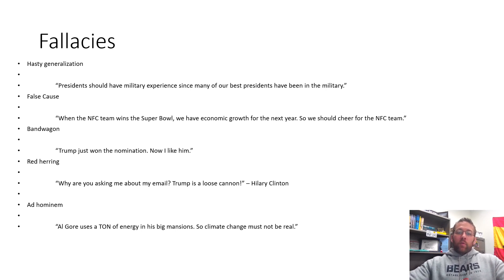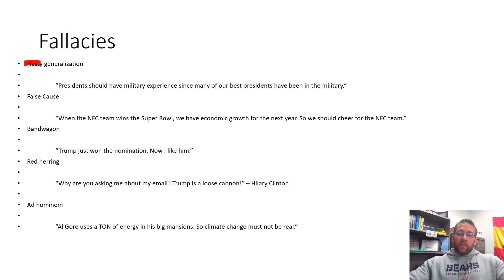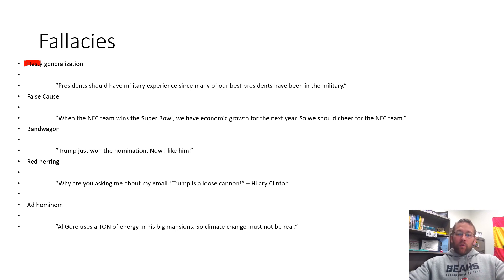We're going to run through some of these quickly. Some examples come from the textbook, some I came up with. The first fallacy is known as a hasty generalization — this is when you stereotype, exaggerate, or overgeneralize. Just because you see a small group within a large population engage in some activity doesn't mean the entire population engages in that activity. Avoid generalizing too broadly.